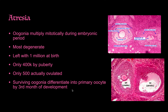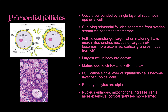Surviving oogonia differentiate into primary oocytes by the third month of development, at which point they've reached prophase I of meiosis. Granulosa cells surround the oocyte and produce progesterone, and the zona pellucida forms. The antrum is the fluid-filled cavity of the secondary follicle. An atretic follicle is shrunken, has no antrum, the zona pellucida has broken down, and the theca folliculi is collapsing and dispersing.